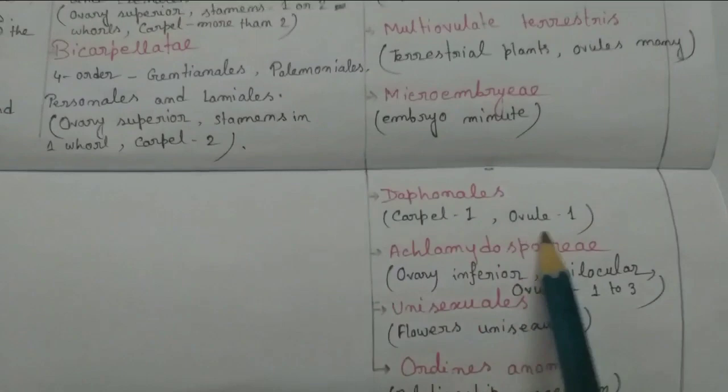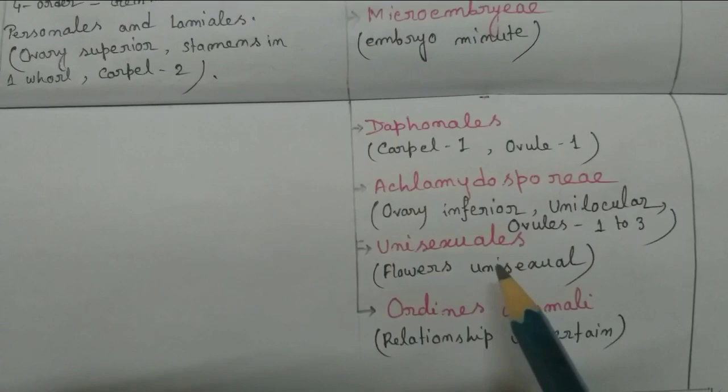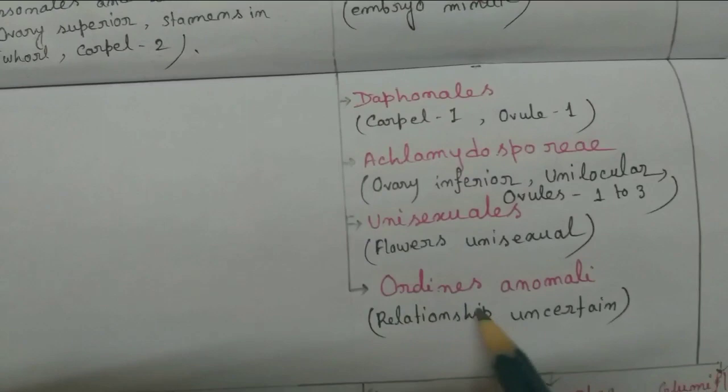Next, the Daphnales: carpel number one and ovule number one. Next, Achlamydosporeae, where ovary inferior, unilocular, and ovule number one, two, or three. Next series, Unisexuales, where the flowers are unisexual. And the last one is Ordines Anomali, where the relationship is uncertain.